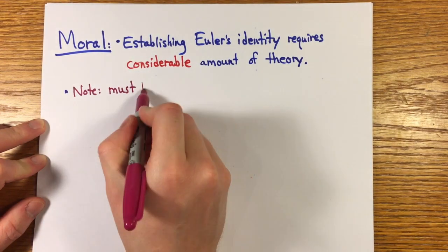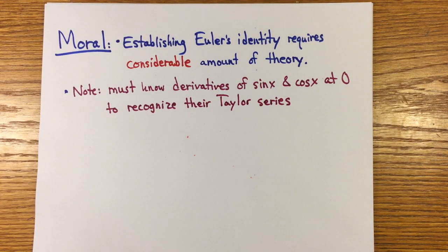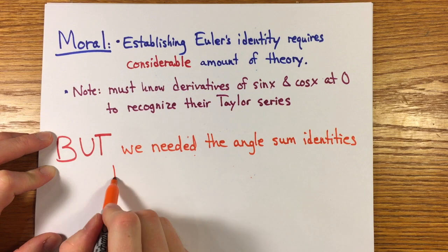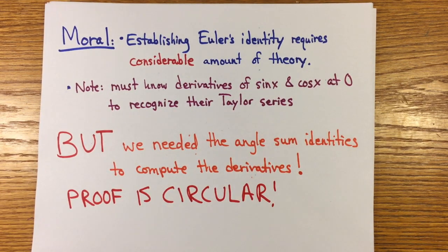But the real trouble is that identifying the Taylor series of sine and cosine depends on knowing their derivatives at x=0 and computing the derivatives requires the angle sum identity, at least if you define the trig functions in the natural way like I did. This makes the whole derivation circular.